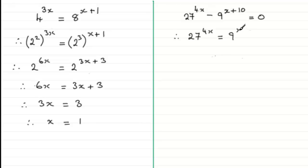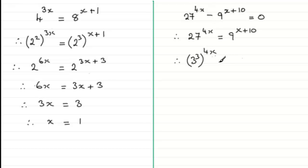Again, we now need to find a common base for both 27 and 9 — they're both powers of 3. 27 is 3 cubed, so we raise that to the power 4x. And 9 is the same as 3 squared, so that can be raised to the power x plus 10.